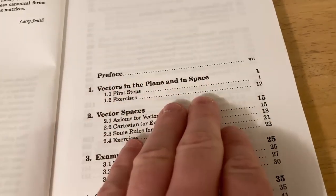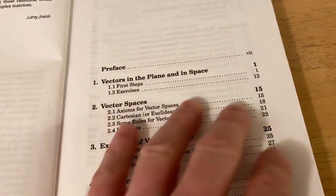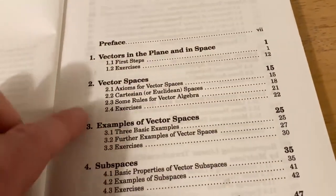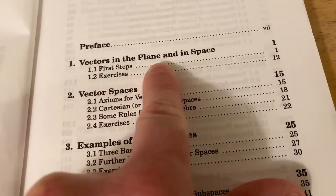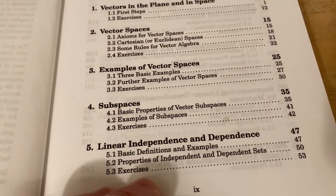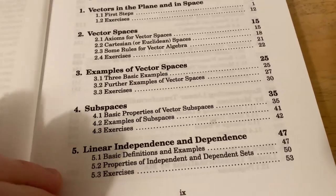Most people can actually pick this book up and start reading it. Even if you haven't had calculus, you might be able to understand and process a lot of this information. It does get harder, but it starts off pretty simple. It starts off with vectors in the plane and in space, vector spaces, examples of vector spaces, subspaces, linear independence and dependence.